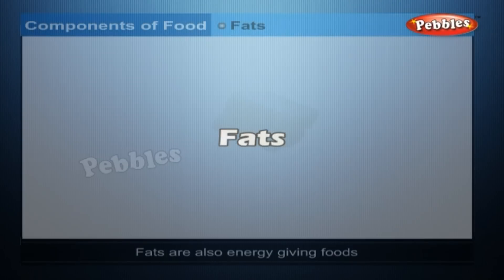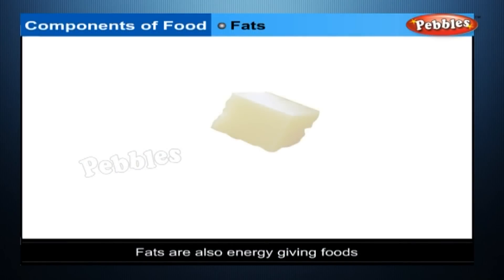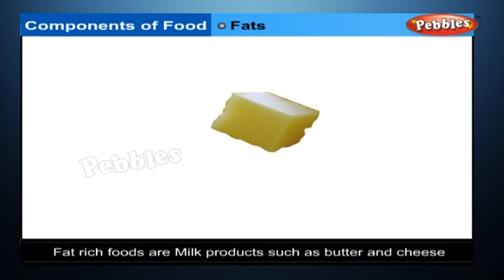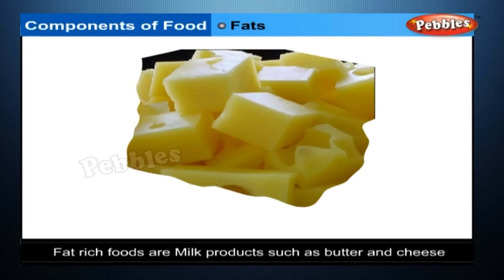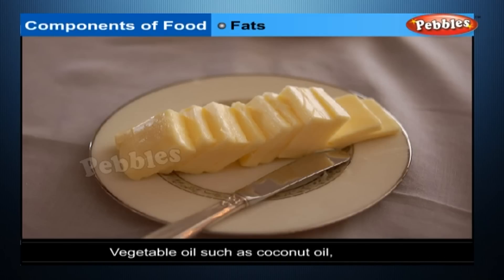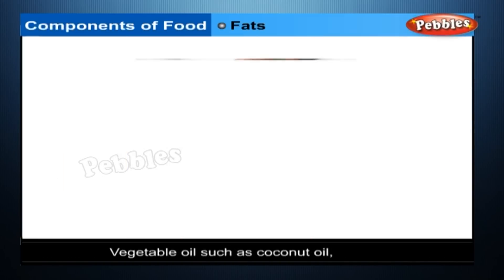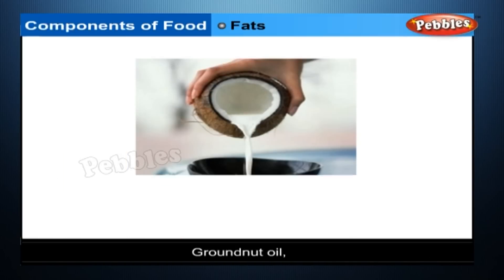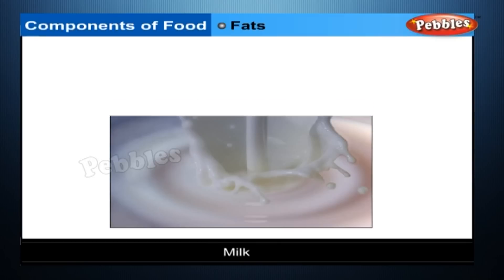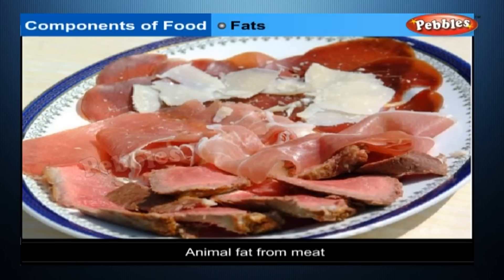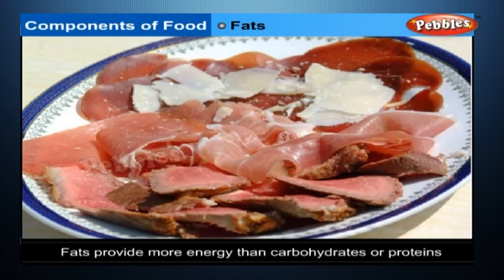Fats: These are also energy-giving foods, producing more energy than carbohydrates. Fat-rich foods are milk products such as butter and cheese, vegetable oils such as coconut oil and groundnut oil, nuts, milk, and animal fat from meat. Fats provide more than double the energy provided by carbohydrates or proteins.